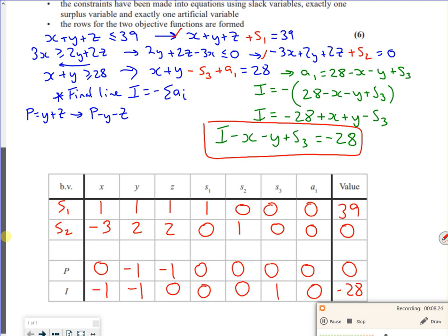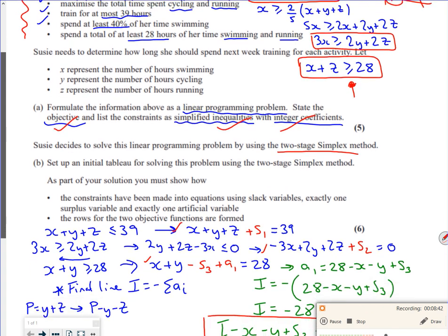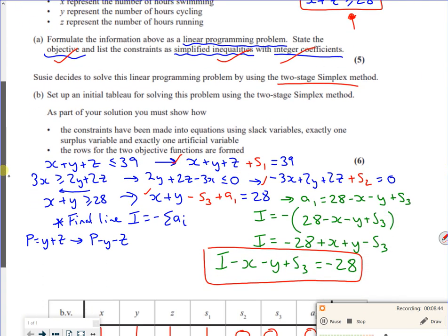And then the final one here is 1X, 1Y, minus an s3, plus an a1. So I think that's pretty much set up. Let's check what the question says. Part of the setup initial tableau for solving using two-stage simplex.